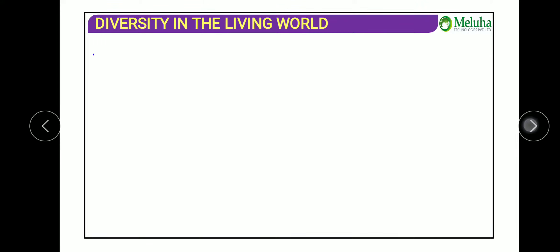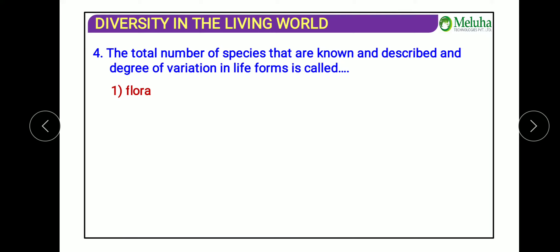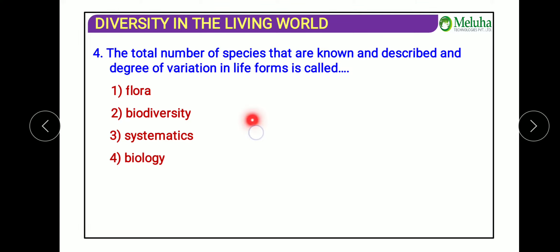The next question: the total number of species that are known and described, and the degree of variation in life forms, is called what? Flora means only plants, fauna means only animals, systematics means arrangement of organisms, and biology means the study of living organisms. The total known and described species — around 1.7 to 1.8 million — is called biodiversity.